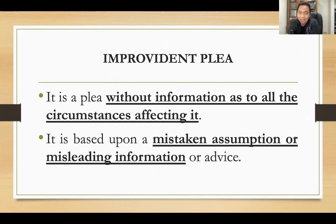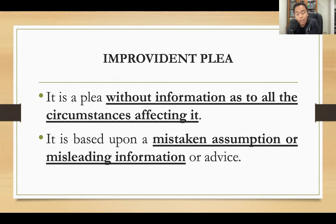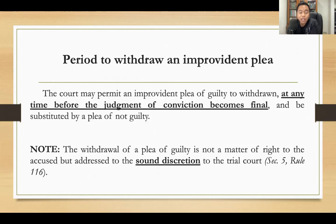What is an improvident plea? An improvident plea is a plea of guilt without the benefit of information as to all the circumstances affecting it — a plea made by mistake, based on a mistaken assumption or misleading information. If there was a mistake in the plea of the accused because of some mistaken assumption or misleading information, the accused can withdraw an improvident plea at any time before the judgment of conviction becomes final — so any time during trial, or before finality of conviction, the accused can change his mind and withdraw the improvident plea.